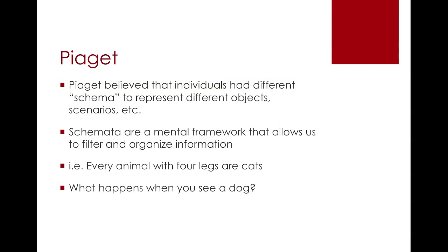Piaget believed that individuals had schemata, or schema, to represent different objects, scenarios, etc. Schemata are mental frameworks that allow us to filter and organize information. For example, if I were to ask you to describe what Tim Hortons looks like, you have a schemata that holds information about it. You could tell me what the layout looks like, the smell of coffee and donuts in the air, or even the price of your favorite drink. All of those pieces of information could come to mind based on the schema that you hold of Tim Hortons.